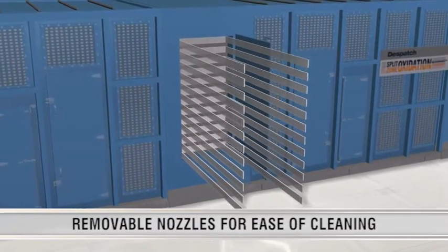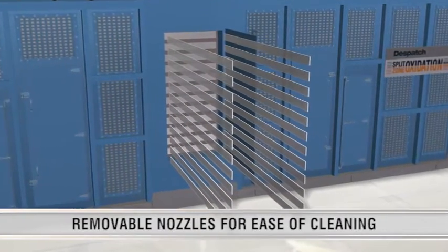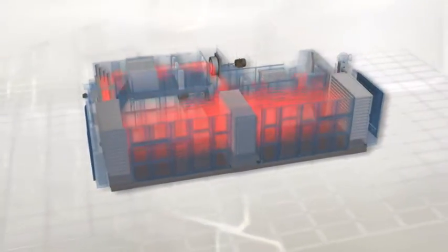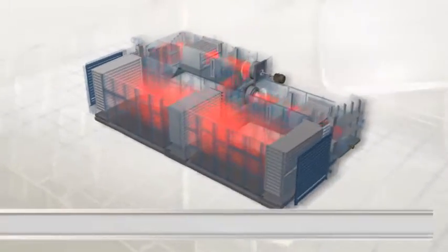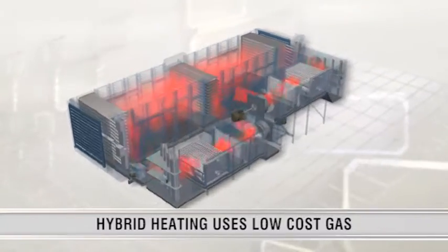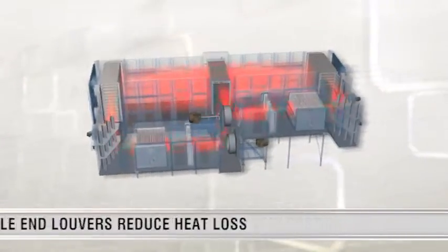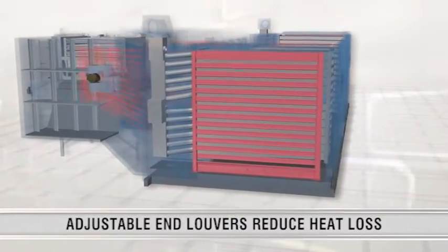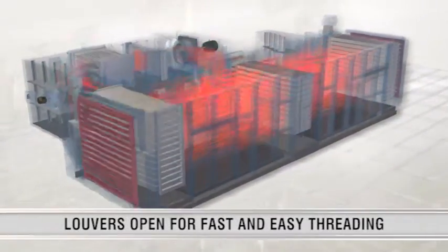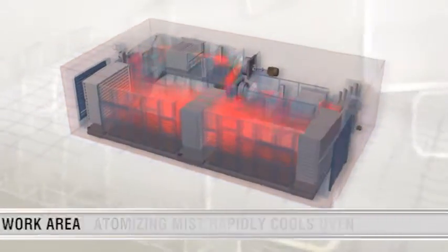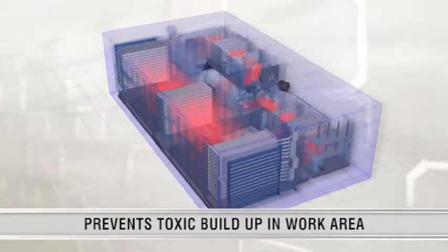Removable nozzles in the supply and return receivers mean you never have to enter the chamber for cleaning. The split-zone oven integrates additional energy-saving features and productivity improvements. Hybrid heating allows you to operate the oven with low-cost gas with the assurance of an electrical backup. Patented adjustable end louvers automatically adjust to significantly reduce heat loss and open for fast and easy threading. Rapid cool-down and heat-up capability minimizes time to restart production.